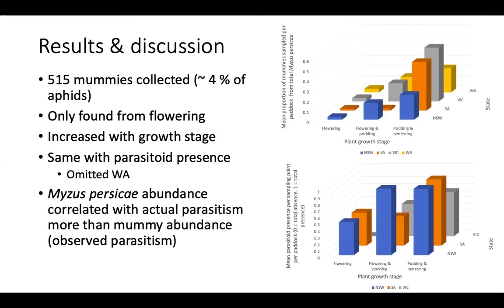We collected around 500 mummies, equating to about 4% of the total aphids collected. They were only found from the flowering stage onwards, similar to the aphids themselves. Unlike the aphids, mummies increased as plant growth stage increased. The same was true for parasitoids — as plant growth stage progressed, parasitoid presence also increased. You'd expect mummies and parasitoids to increase in tandem since mummies are only formed by those parasitoids.